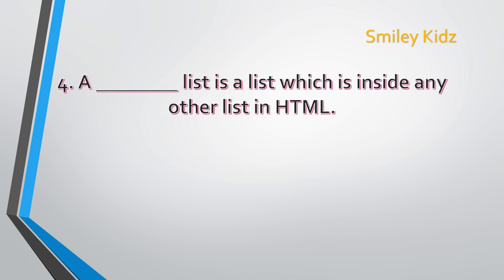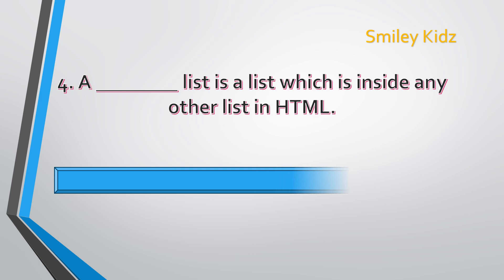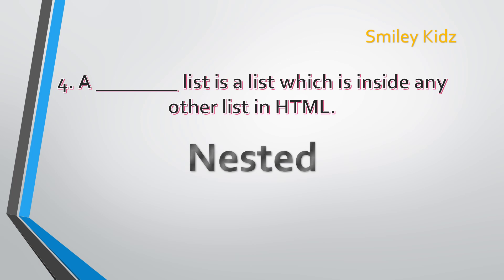Question number 4. A dash list is a list which is inside any other list in HTML. Your time starts now. Your time is up. The correct answer is nested. A nested list is a list which is inside any other list in HTML.